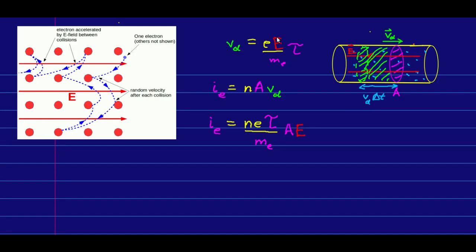So, now we have an expression for the drift speed, and an expression for the electron current in terms of it, and so we can put the one into the other and get a final form for the electron current like this. And I've written it split up this way to separate out this part, which is all material properties, from this part, which is to do with the geometry of the wire or whatever the conductor is, and this part, the E field, which is something that's perhaps directly under our control based on how we connect this up to a battery or whatever.